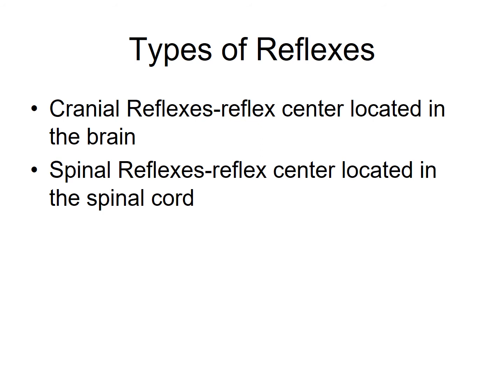For each reflex listed on your study guide, you must also know whether it is a cranial or spinal reflex. Cranial reflexes have their reflex centers located in the brain, and spinal reflexes have their reflex centers located in the spinal cord. For the most part, reflexes tested above the neck — such as the gag reflex, the pupillary light reflex, or the corneal reflex — are cranial reflexes. Reflexes below the neck, such as the patellar knee-jerk reflex, calcaneal reflex, and plantar reflexes, are spinal reflexes.